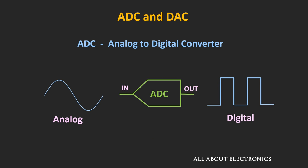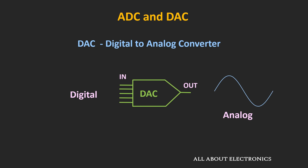ADC stands for Analog-to-Digital Converter, and as its name suggests, it converts the analog signal into the digital signal. Similarly, DAC stands for Digital-to-Analog Converter, and it converts the digital input into the analog signal.